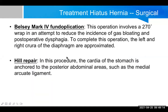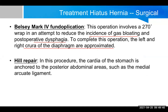Belsey Mark IV fundoplication involves a 270-degree wrap, in an attempt to reduce the incidence of gas bloating and postoperative dysphagia. To complete this operation, the left and right crura of the diaphragm are approximated. The reason for using 270 degrees rather than 360 degrees is that a full 360-degree wrap creates a very narrow area, potentially causing gas retention and other problems. The 270-degree wrap is a modification of Nissen fundoplication and is known as Belsey Mark IV fundoplication.